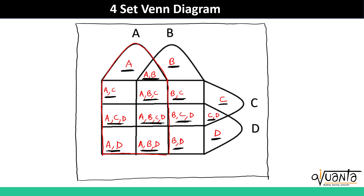Now if I put a universal set outside these four sets, then this region which is outside all four sets will be not A, not B, not C and not D. This big set will be the universal set.